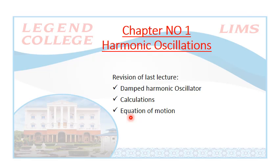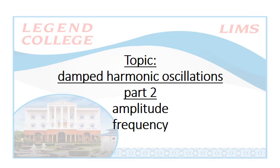We stopped at equation number 47. Today we will start and derive the equation of motion for the damped harmonic oscillator, find the amplitude, count the frequency, and see which frequency is greater — the one derived in different cases or the damped harmonic oscillator's frequency.